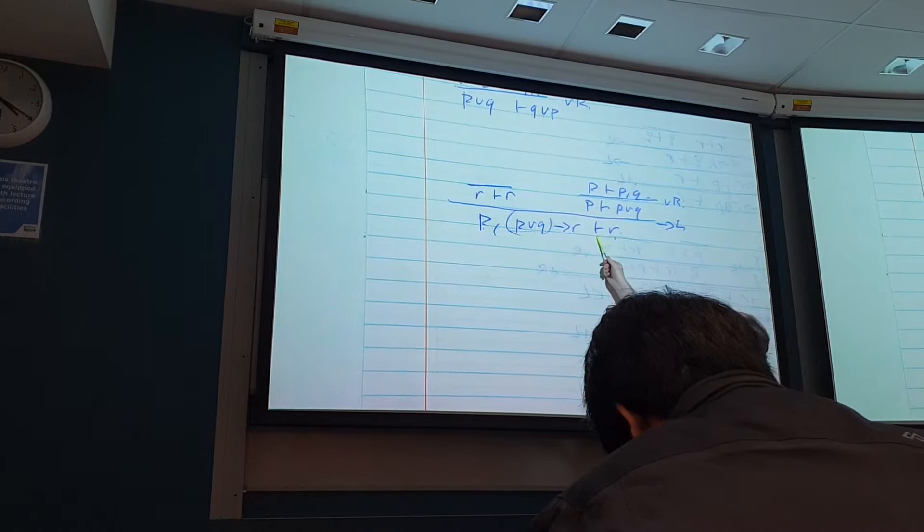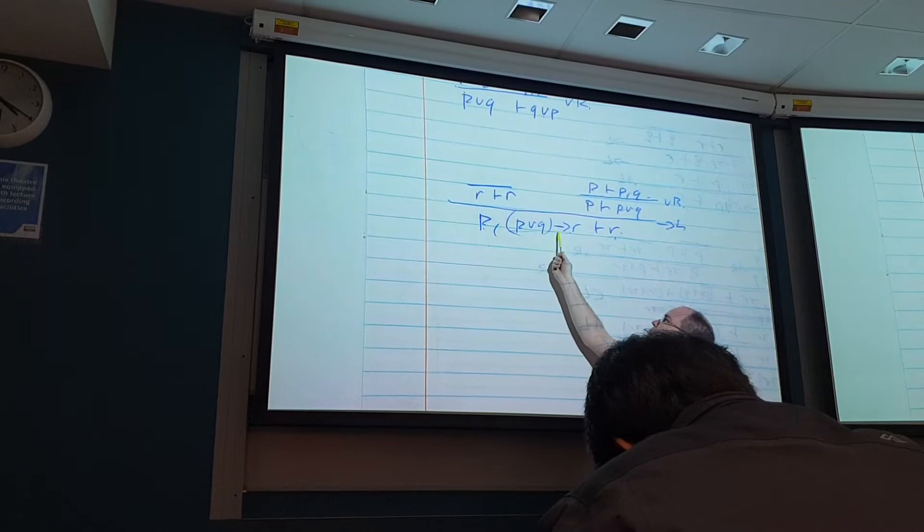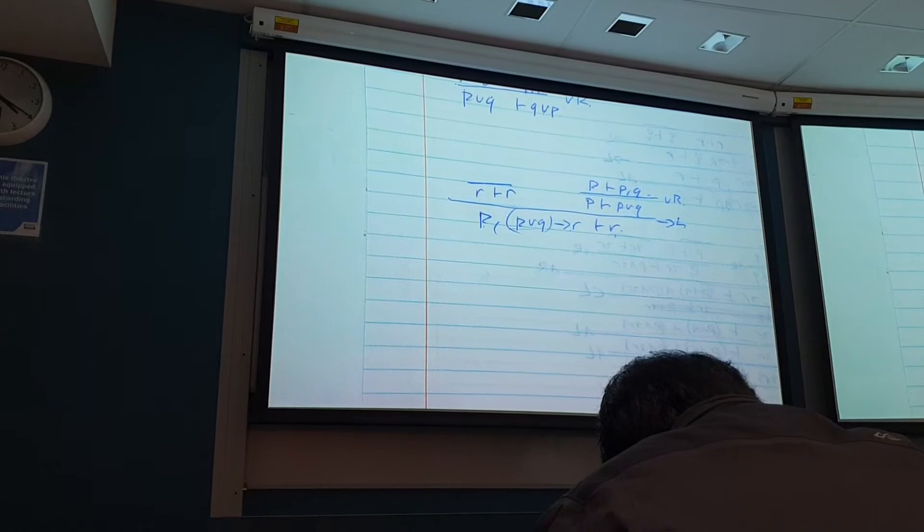Sorry, is that, you know, in the first line, the bottom? Yeah, so that's P. P, comma, open bracket, P, vel, Q, close bracket, arrow, R, P, for R. My handwriting is terrible. Yeah. It's question seven, 18.